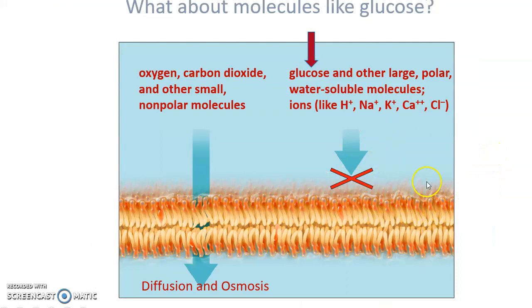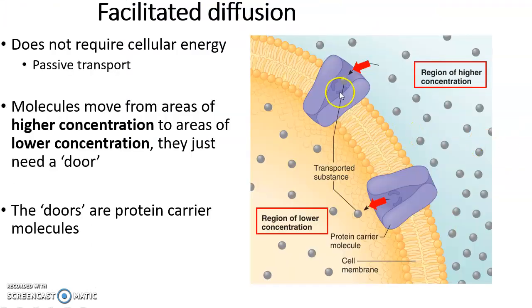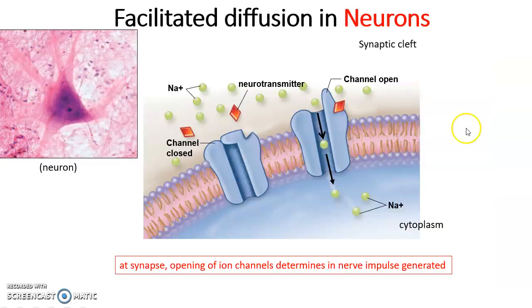What about other things that can't cross the membrane? We have facilitated diffusion, which lets specific things that cannot normally cross through. Again, high concentration to low, but only where these protein channels are. These are acting as windows or doors, allowing something specific to enter or exit the cell. Still passive transport, still no energy required.